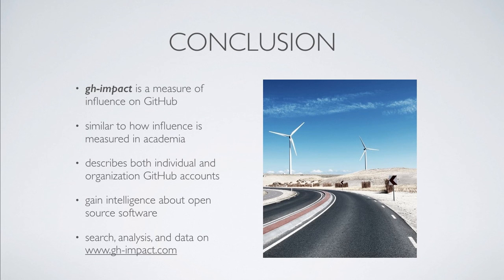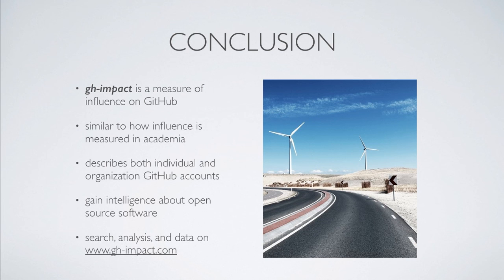In conclusion, GH Impact is a measure of influence on GitHub, and it behaves similarly to how influence is calculated in academia. GH Impact describes both individual and organization GitHub accounts, and this number is useful for gaining intelligence about the open source software industry as a whole. Search, analysis, and data are available from the website www.gh-impact.com. Thank you very much for watching!